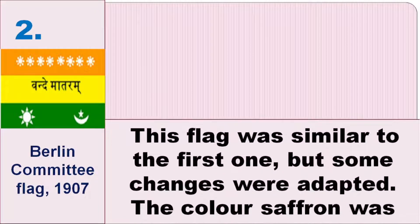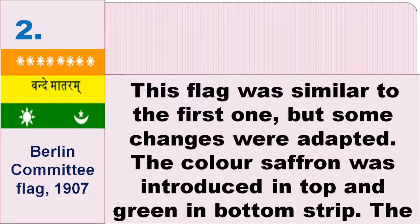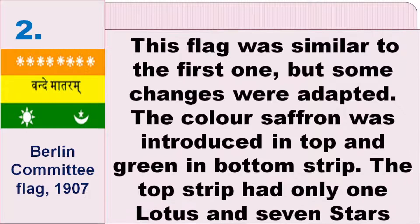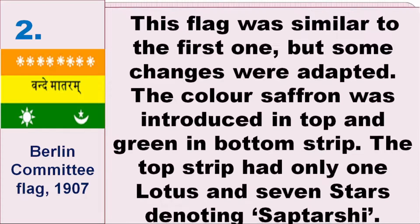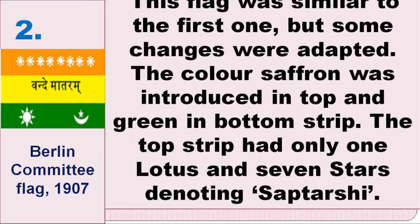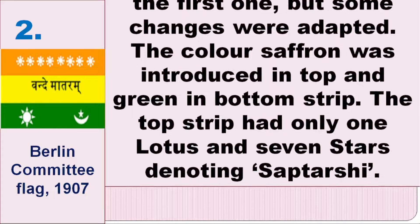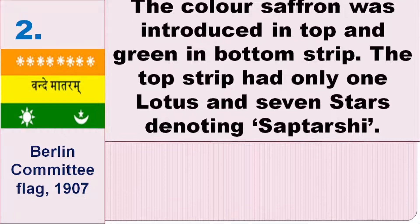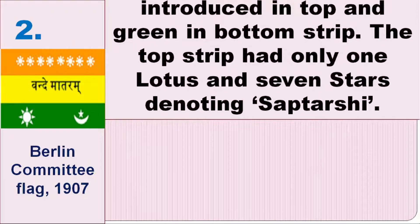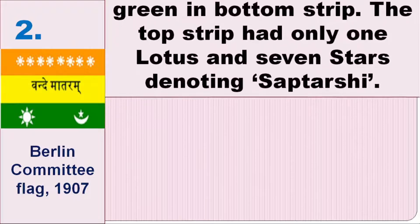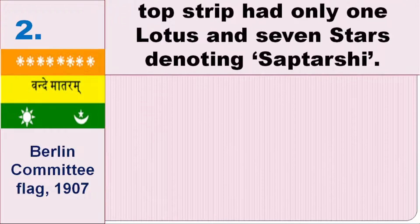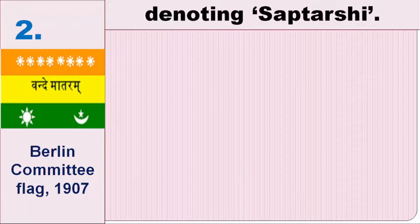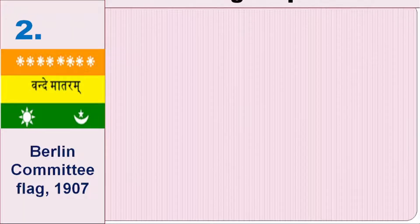This Cama flag was similar to the first one, but some changes were made. The color saffron was introduced on top and green on the bottom strip. The top strip had only one lotus and seven stars denoting Saptarshi.